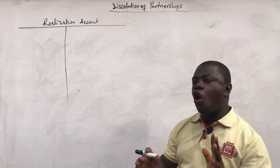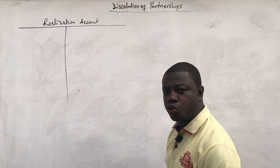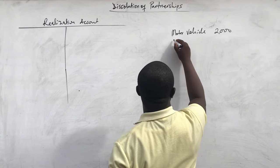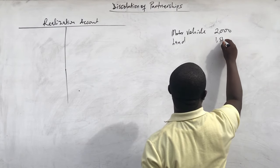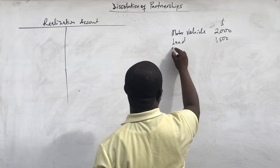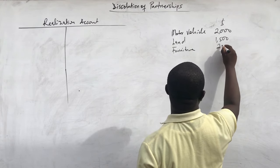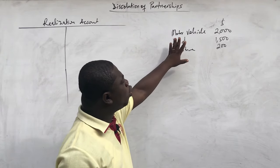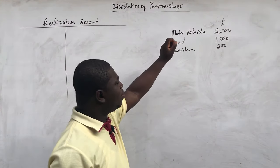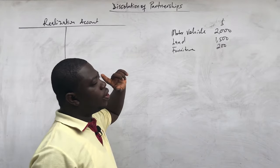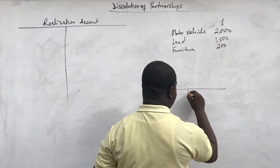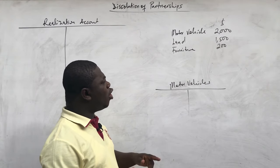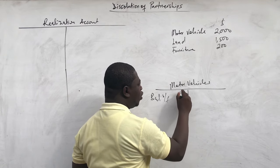We open the realization account because we are realizing all the assets — we are selling them all off. Once you are given the question, you close off all your asset balances and transfer them into the realization account. For example, imagine you have motor vehicles valued at 2,000, land at 1,500, and furniture at 200. You are supposed to close off these accounts — they will be in the statement of financial position — but you are going to close them into the realization account. The motor vehicles account has a debit balance, so the balance brought forward will be two thousand dollars.